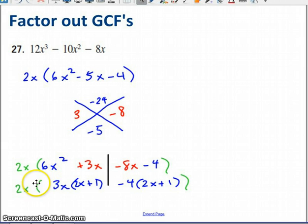Now I separate the left side from the right side. On the left you're going to have 3x times 2x plus one, and on the right you're going to have minus four times again, 2x plus one.